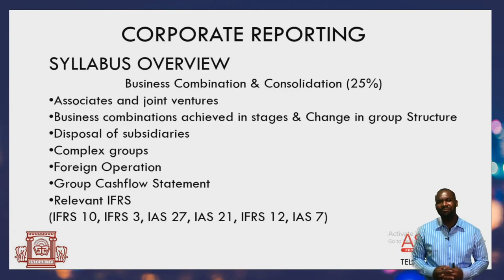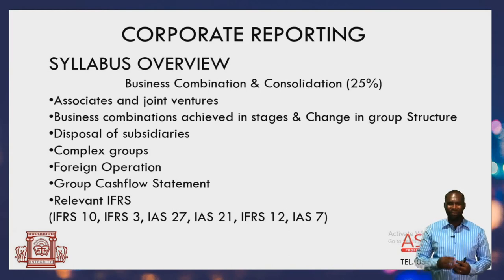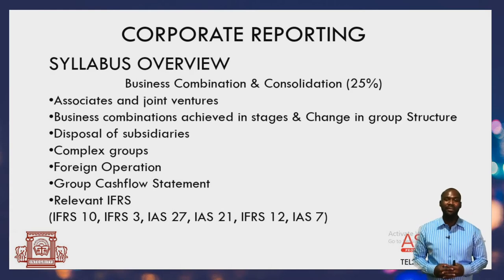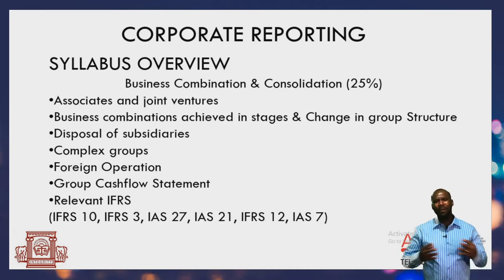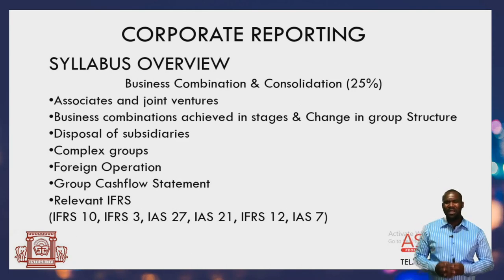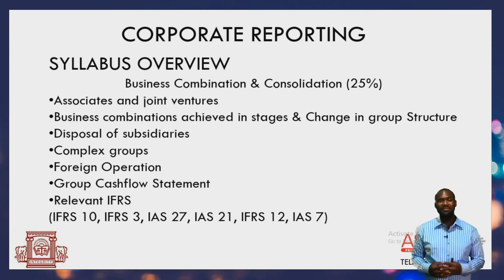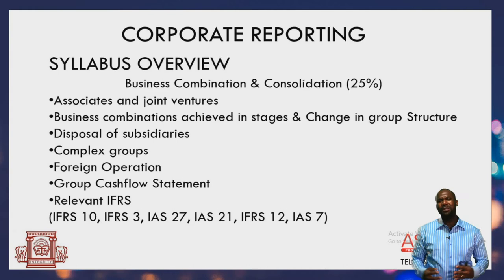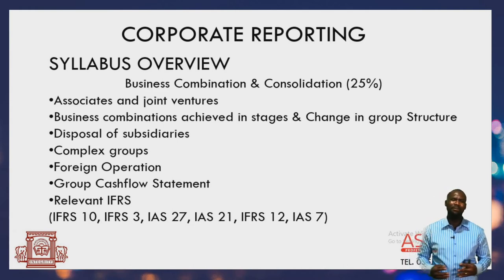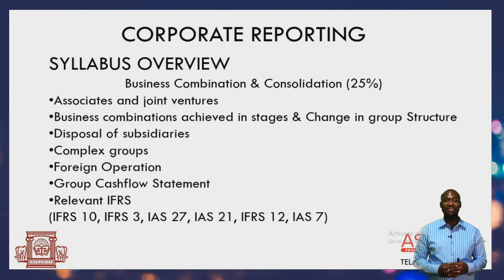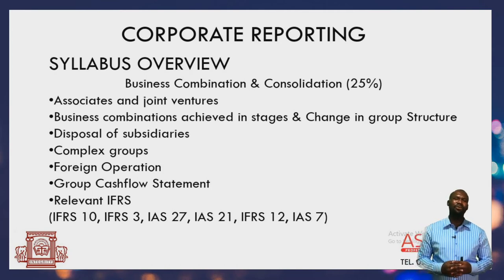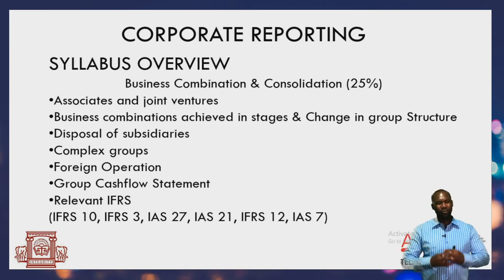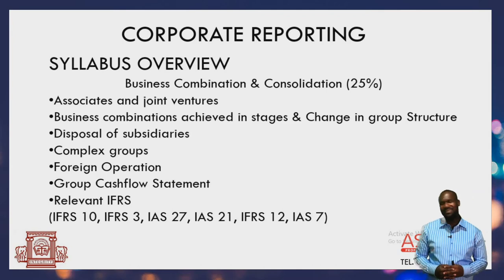For level 3, complexities abound in business combinations. Key issues include associates and joint ventures — areas done at level 2 but now with more complexity. We also cover business combinations achieved in stages, sometimes called step acquisition; changes in group structure through further acquisition; disposals — which may or may not result in loss of control; complex group structures including vertical and mixed groups; foreign operations and how to translate a foreign subsidiary for consolidation; and group cash flow statements guided by IAS 7. The weight for business combinations is 25%.